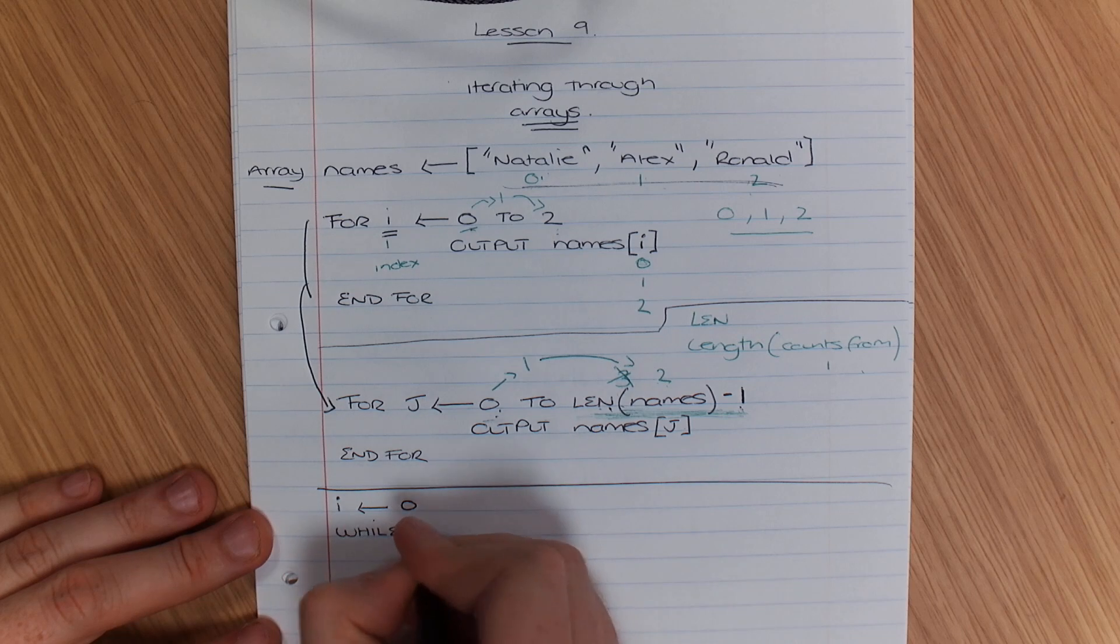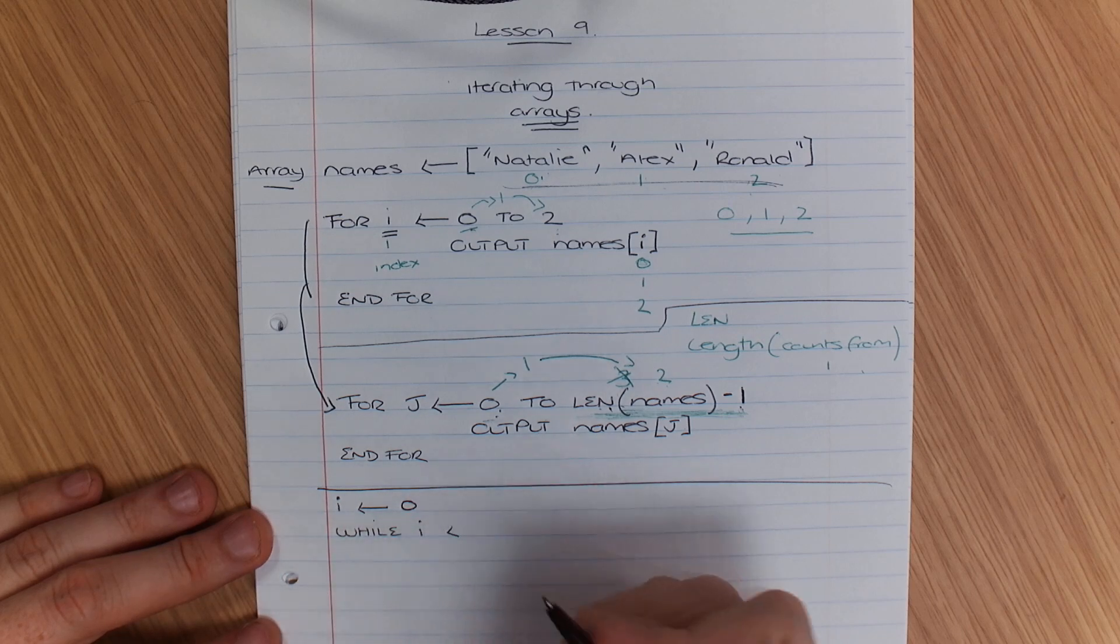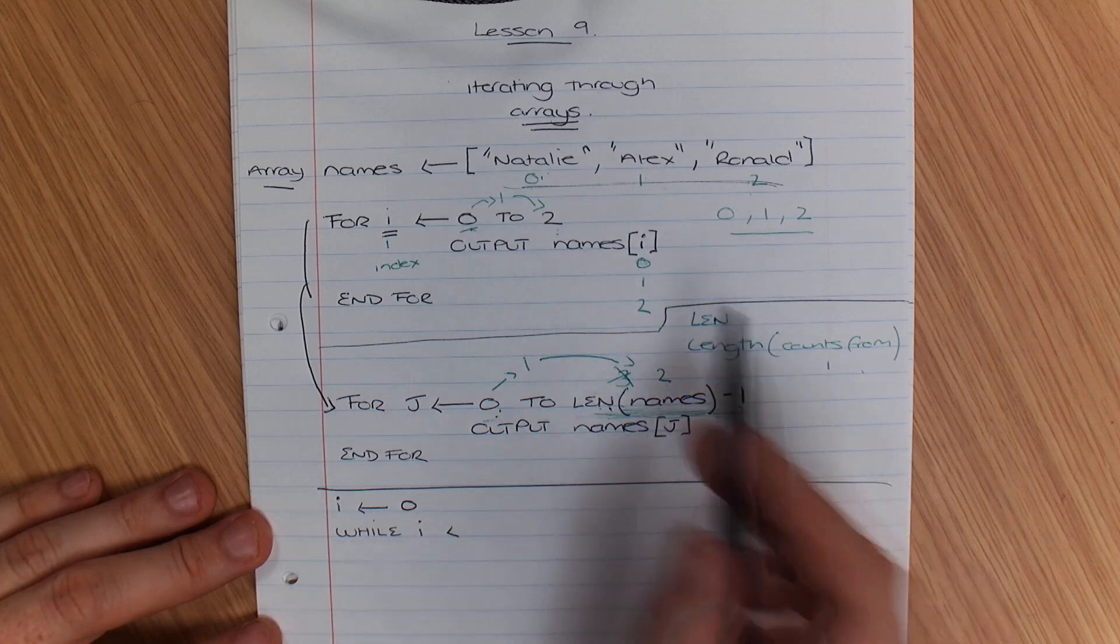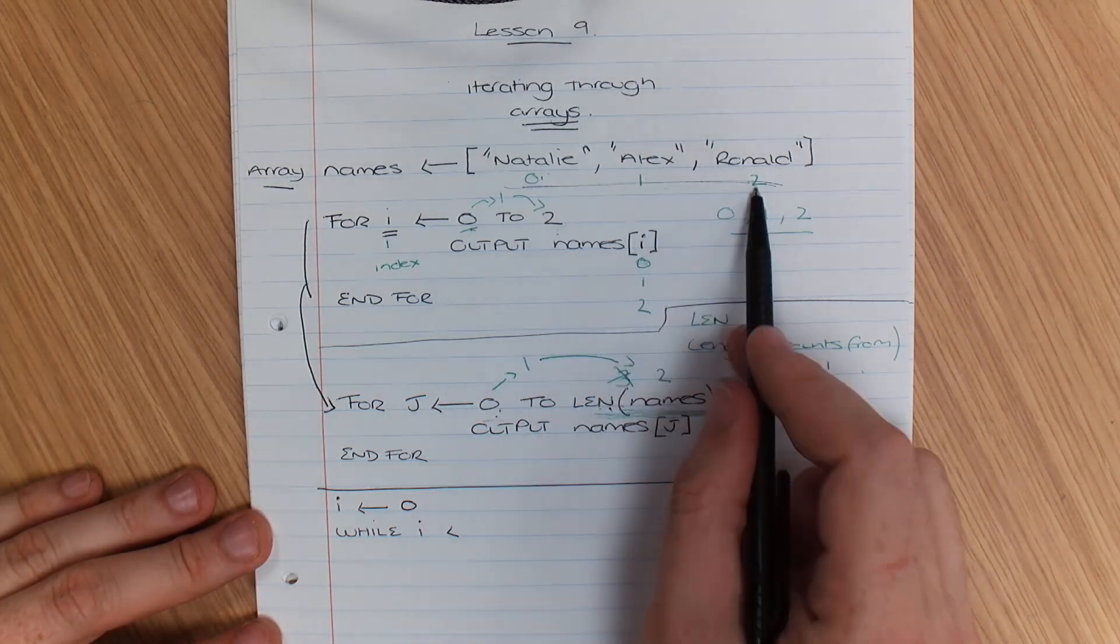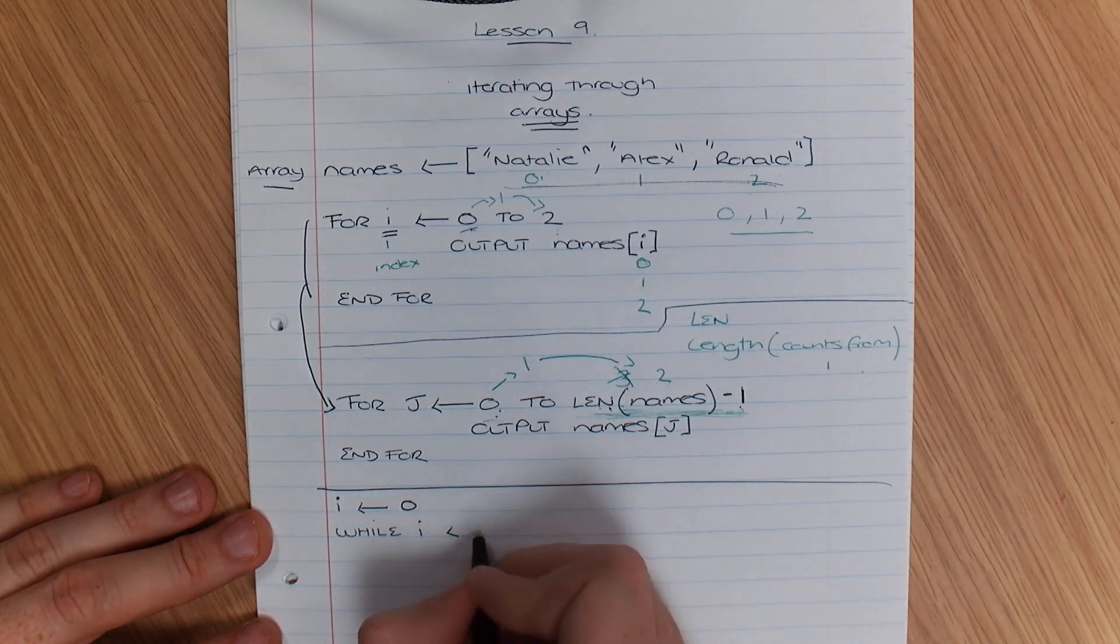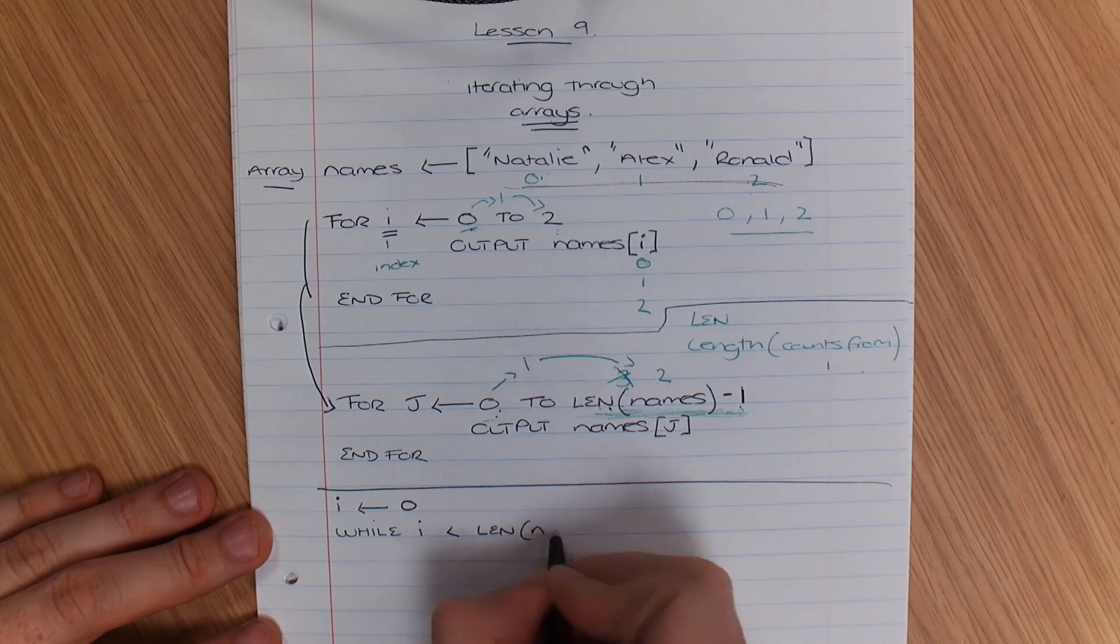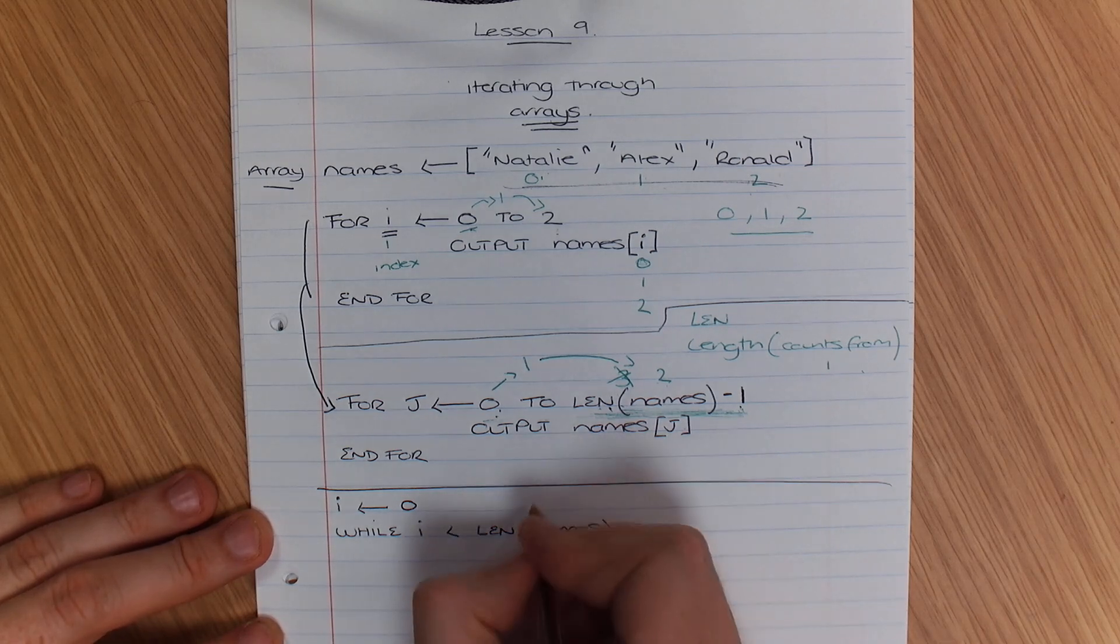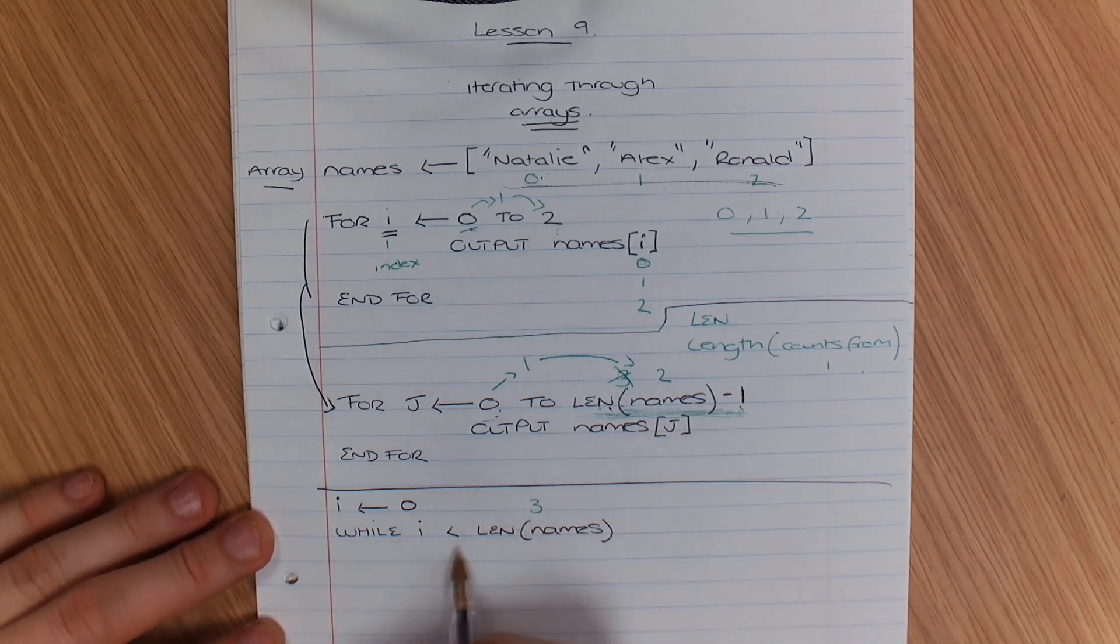Some people might say while i is less than, in this case, we've got 0, 1, 2. While i is less than, if you're using a while loop, less than len of names. So while i is less than, just so you know what this value is, I'm writing it in green above. While i is less than 3.